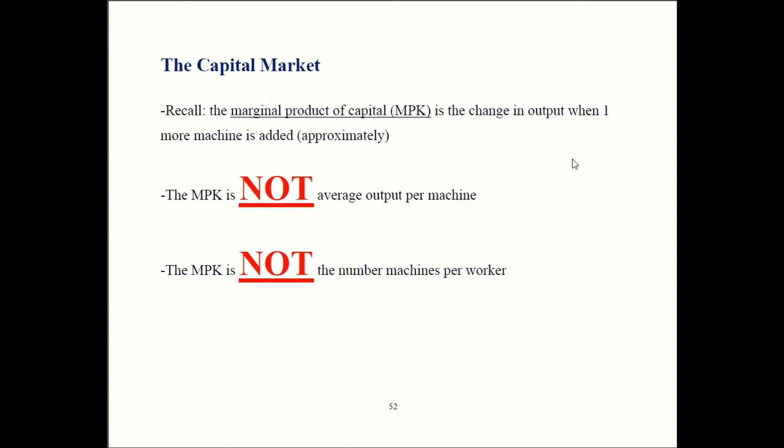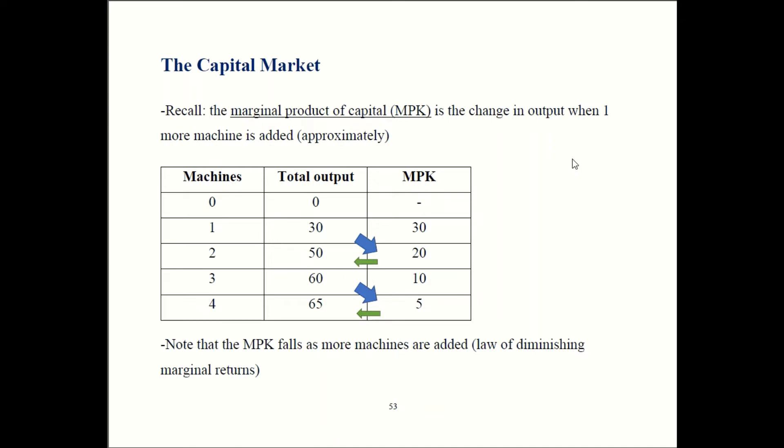Hopefully you didn't fast forward through this. I know I've been repeating myself a lot, but it's a really big deal. I don't want to see you guys mess up easy questions. A simple numerical example of how the MPK works. Let's say we have no machines, you have no output. If you add one machine to your factory, output is going to be 30. So MPK is going to be 30 as well because output has risen by 30. If you go from one machine to having two machines, output is going to be 50 now. That's an increase of 20. So your MPK is going to be 20. If you add a third machine, output goes up to 60. MPK is going to be 10. And lastly, we have a fourth machine. Output is going to be 65 in total. That means the MPK is going to be 5.